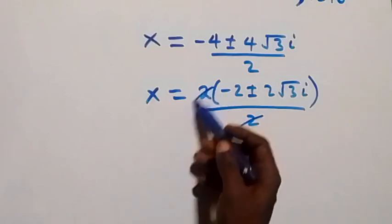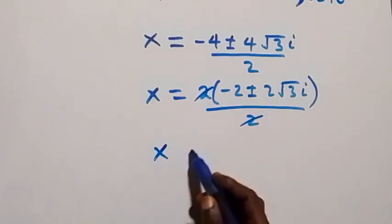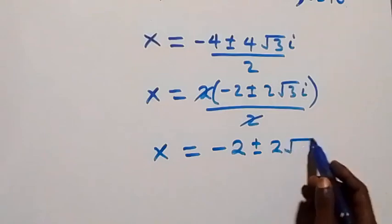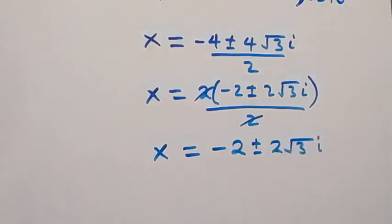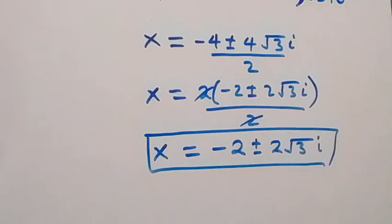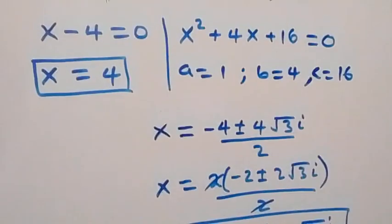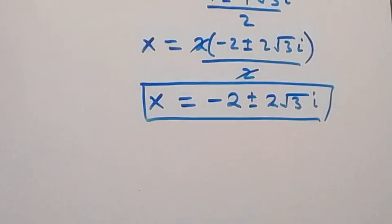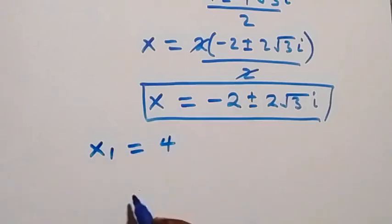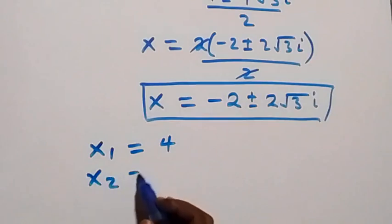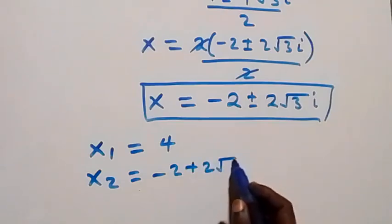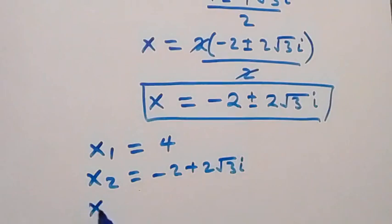We have two complex solutions and altogether three solutions. x₁ equals 4, which is the real solution. x₂ equals negative 2 plus 2 root 3 i. x₃ equals negative 2 minus 2 root 3 i.